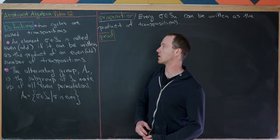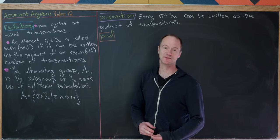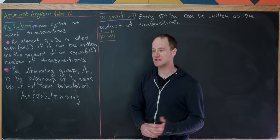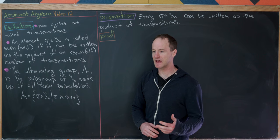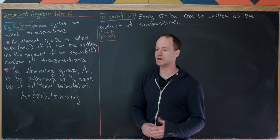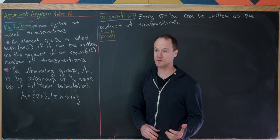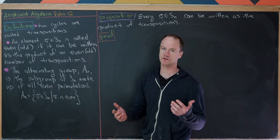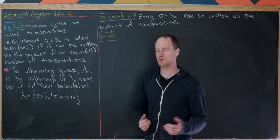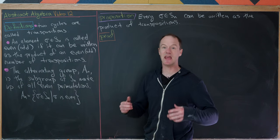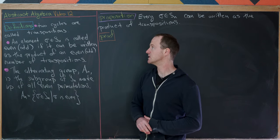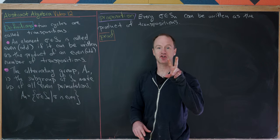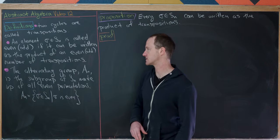The first definition: two-cycles are called transpositions. Here we're talking about elements of Sn. Every element of Sn can be written as the product of disjoint cycles, and the length of those cycles describes what cycles they are — two-cycles, three-cycles, four-cycles, M-cycles. If it's a two-cycle, it's called a transposition, because it transposes two things.